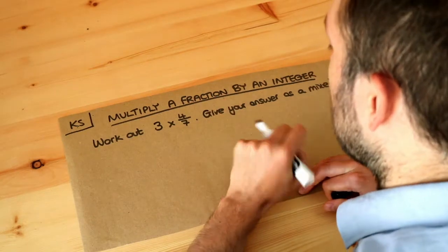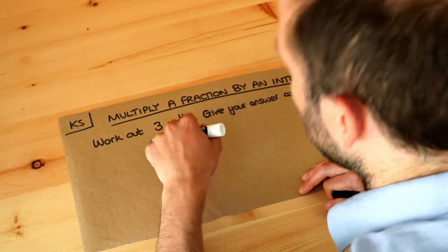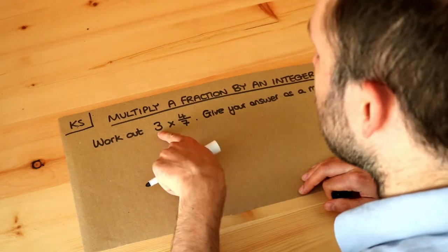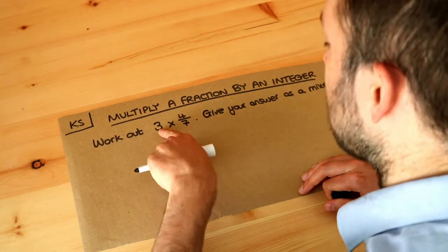And the only thing you need to know for this video is that whenever you have a whole number involved in a multiplication or division of fractions, you can turn that into a fraction by just putting it over 1.